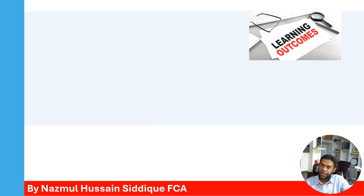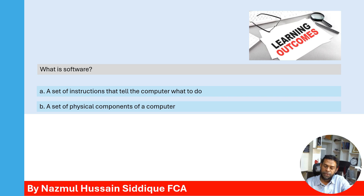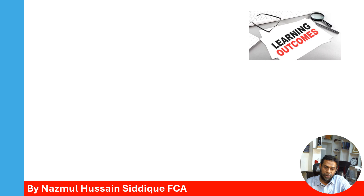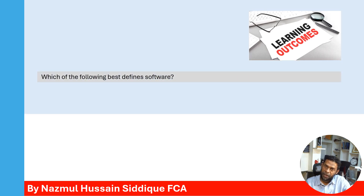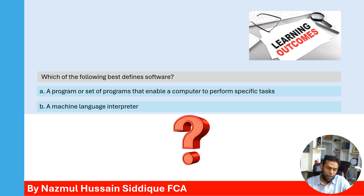Now we shall test our learning outcomes. Question one: What is software? Option A: a set of instructions that tell the computer what to do. Option B: a set of physical components of a computer. The correct answer is Option A — software is a set of instructions that tell the computer what to do. Question two: Which of the following best defines software? Option A: a program or set of programs that enable a computer to perform specific tasks. Option B: a machine language interpreter. Option A is the correct answer.